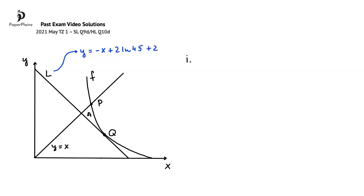Since we are looking for the x-coordinate of the intersection of this line and the line y equals x, we can simply set the expressions for the two lines equal to each other and then solve for x. Therefore, we'll write that x is equal to negative x plus 2 ln 45 plus 2. Adding x to both sides, we get that 2x is equal to 2 ln 45 plus 2, and dividing by 2 gives us that x is ln 45 plus 1.